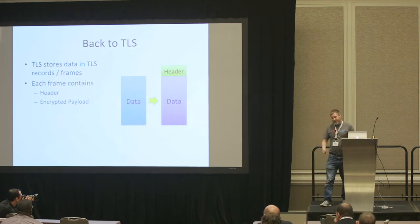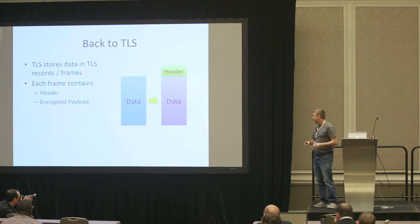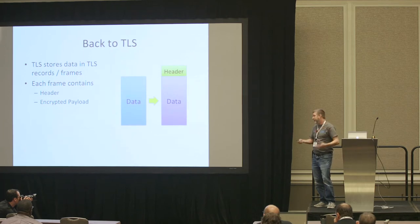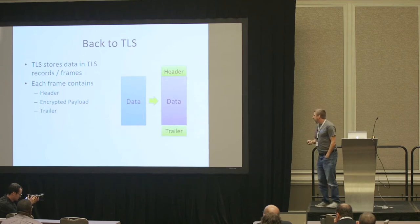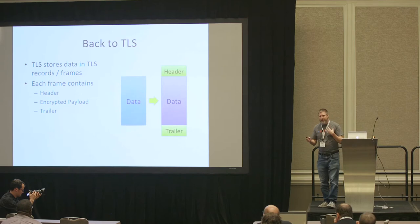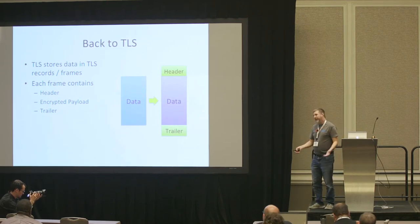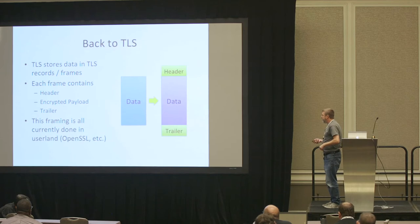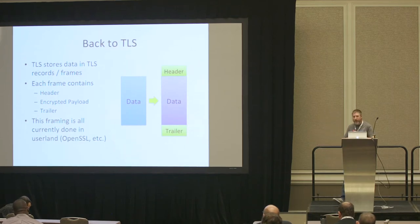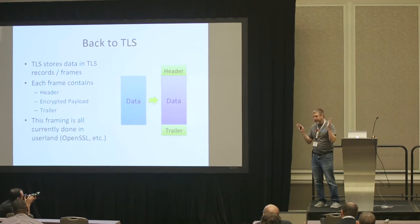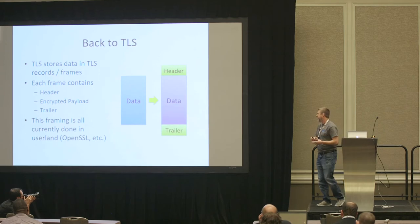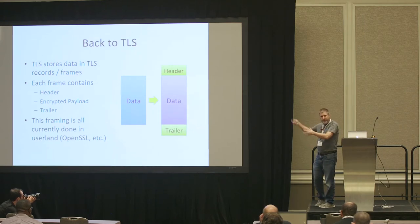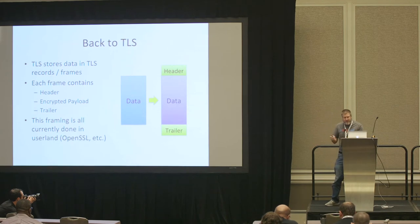Then we take the data and encrypt it — we do some transform to make it look different from the plaintext data the application is working with. Finally, we append a trailer to the record, which holds authentication data to verify the record is valid. Right now, in existing workflows, all this framing is done in userland using a library like OpenSSL, LibreSSL, or other SSL/TLS libraries. They run in userland and transform chunks of application data into TLS frames, which also makes the data a bit larger.